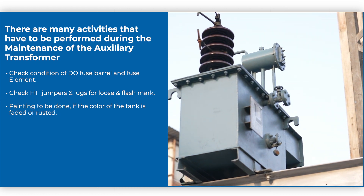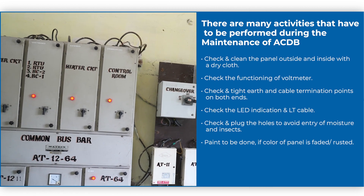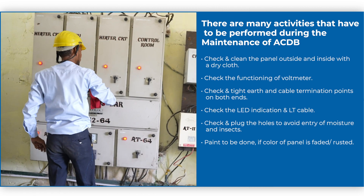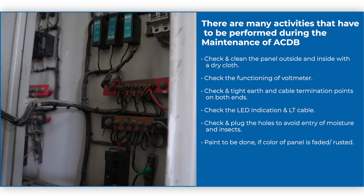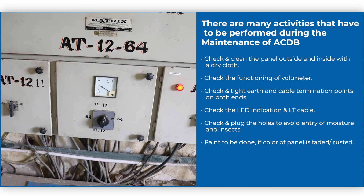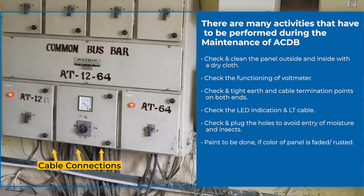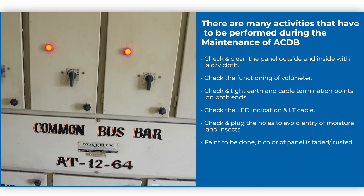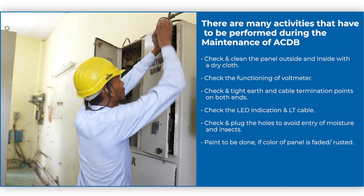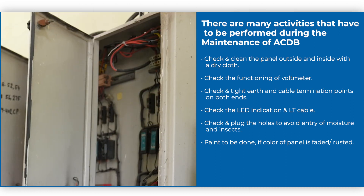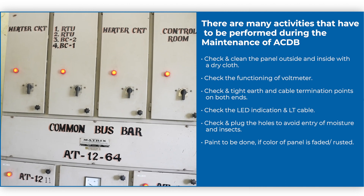There are many activities to be performed during the maintenance of ACDB. Check and clean the panel outside and inside with a dry cloth. Check the functioning of voltmeter. Check and tighten earth and cable termination points on both ends. Check the LED indication and LT cable. Check and plug the holes to avoid entry of moisture and insects. Paint to be done if color of panel is faded or rusty.